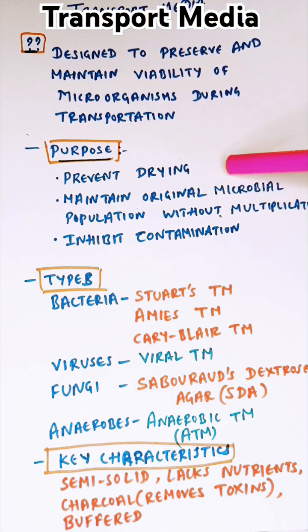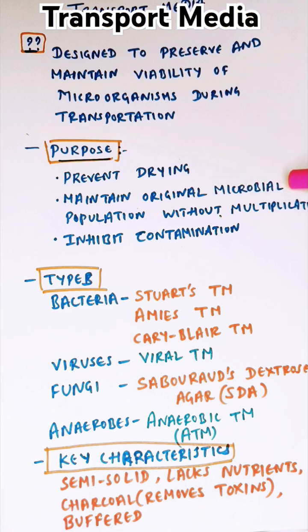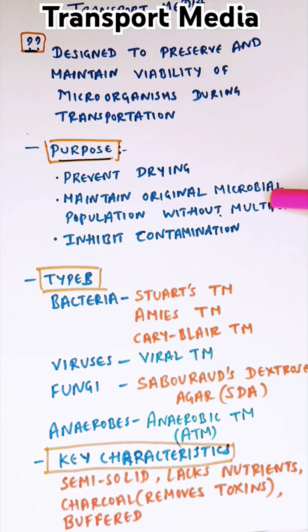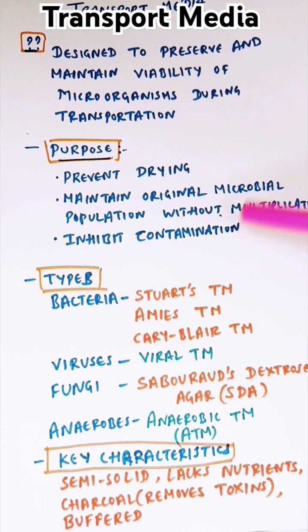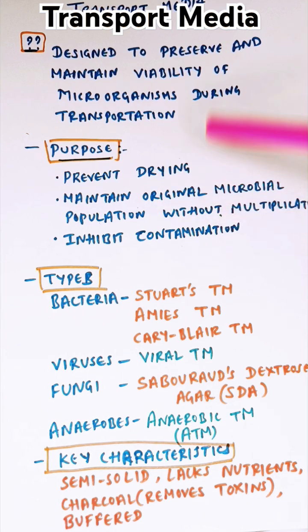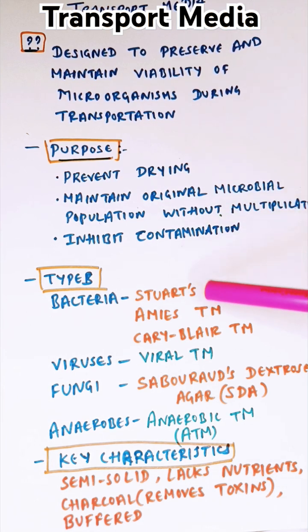Transport media maintains the original microbial population without multiplication. The function is to allow organisms to just survive but not multiply, while also preventing contamination from external microbes. Sometimes it provides a suitable environment for the survival of delicate organisms. This is the main purpose of transport media.